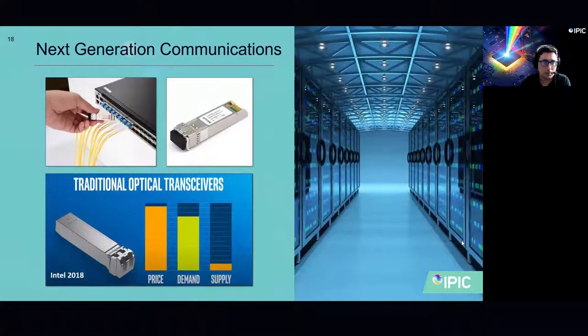The key to current optical communication systems is really the optical transceiver. These transceivers that you can see here actually convert electrical signals to light signals and vice versa. So data is stored in a server in electrical form. These transceivers are used to convert the electrical signal to an optical signal before it's sent via optical fiber to another part of a server in a data center or else to the outside network. Traditional optical transceivers are in high demand because we need more and more of them to keep up the current demand for internet bandwidth. This drives up their price and makes them have very low supply.